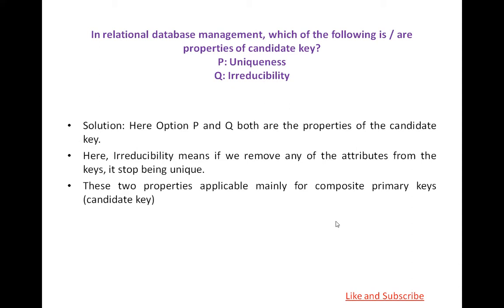First question: In relational database management, which of the following is the properties of a Candidate Key? The options are uniqueness and irreducibility. The solution is that uniqueness and irreducibility both are the properties of the Candidate Key. Irreducibility means if you remove any of the attributes from the key, it stops being unique. These two properties apply mainly for composite primary key, and we know that composite primary key is the Candidate Key.